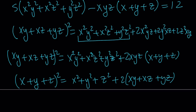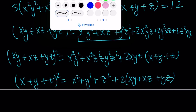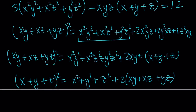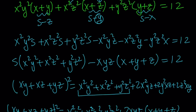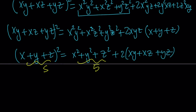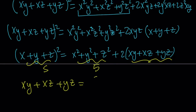So squaring s gives s squared equals x squared plus y squared plus z squared plus 2(xy + xz + yz). We know the sum of squares is 5, so s squared equals 5 plus 2(xy + xz + yz). From here we can find xy plus xz plus yz in terms of s. If you subtract 5 and divide by 2, you get xy plus xz plus yz equals (s squared minus 5) divided by 2. That's an important finding.